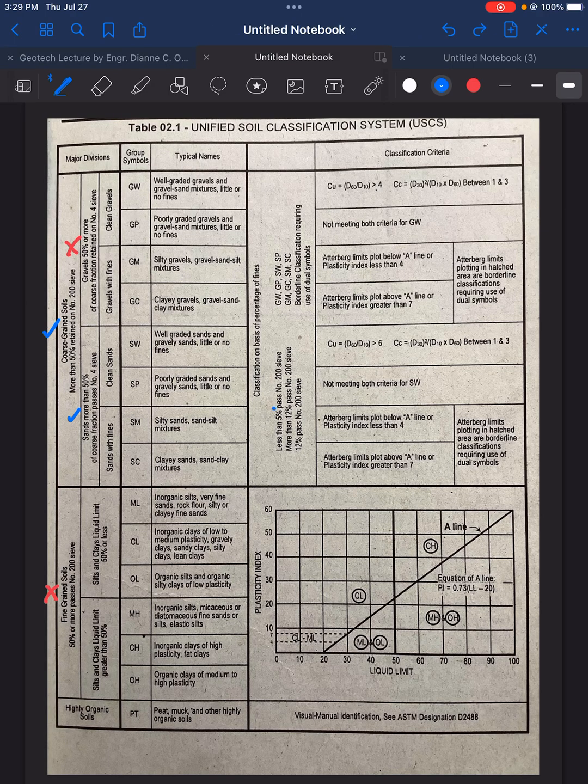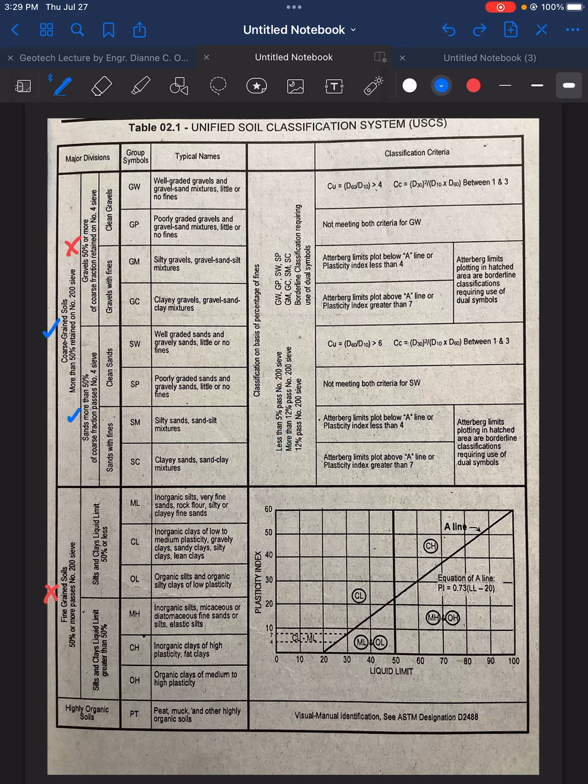It says here, less than 5% passes sieve number 4. So that is correct. Yes, indeed, less than 5% passes sieve number 200.